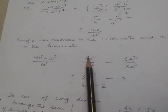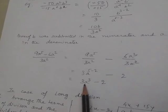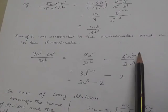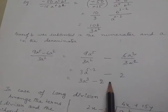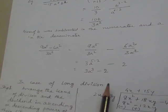So 9÷3 equals 3, and a⁵⁻² equals a³, giving 3a³. And here a² divided by a² cancels, and 6÷3 equals 2, giving -2. So my answer is 3a³ - 2.